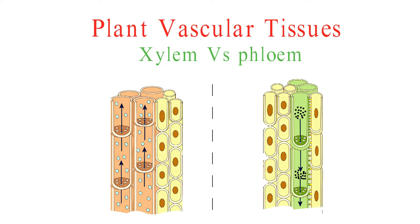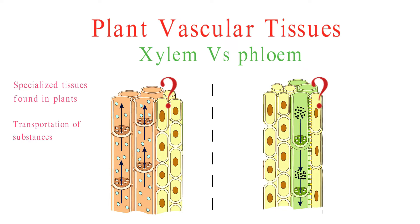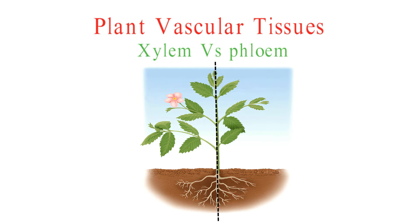First things first, let's define what phloem and xylem are. Phloem and xylem are specialized tissues found in plants, responsible for the transportation of essential substances. Think of them as the plant's circulatory system. But here's the catch — they have distinct roles.